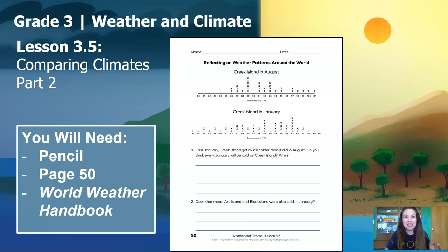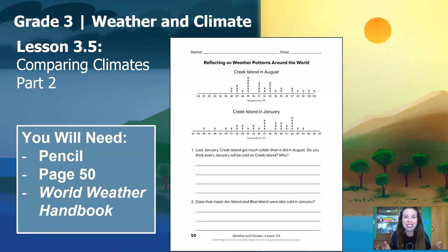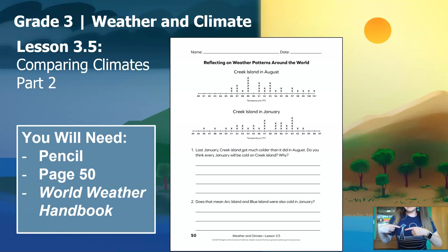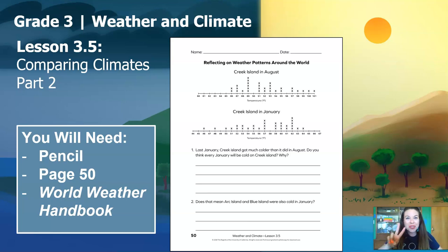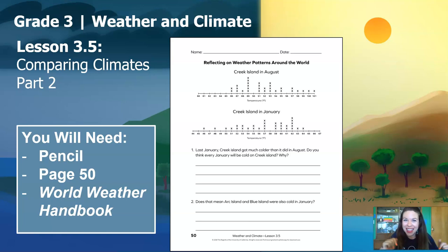I'm really excited because in today's lesson, we're going to be talking about local weather in the place where I live, which is Seattle, Washington. I'm even wearing my Seattle shirt. You can see it has the Space Needle and Mount Rainier — two things that people think of when they think of Seattle. Are you excited for science today? I know I am. Let's go.